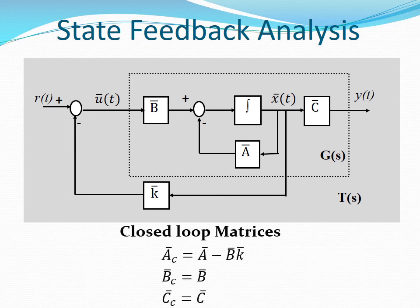From these equations, we can work out the closed loop matrices. We find that the closed loop A matrix is A minus BK, the closed loop B matrix is equal to B, and the closed loop C matrix is equal to C.